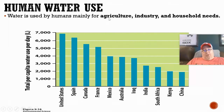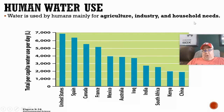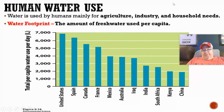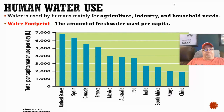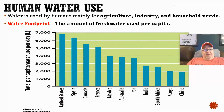Agriculture — we use a lot of water in the agricultural industry. We use a lot of water in industry, and we use a lot of water for household needs. How much water we use depends on where you live. Earlier in the year we talked about a carbon footprint — well, we actually have a water footprint. The water footprint is basically how much water is needed to sustain your daily life.